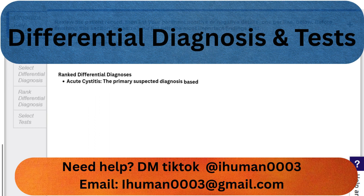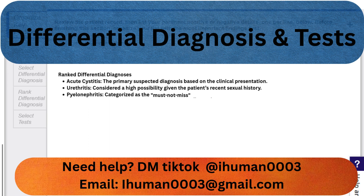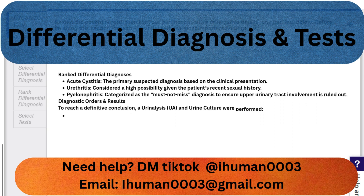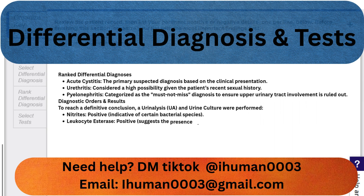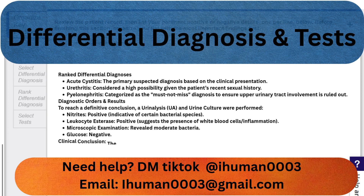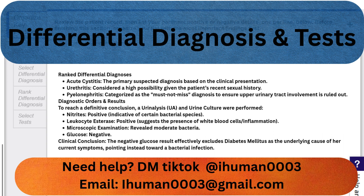Our ranked differential for this case is: acute cystitis as our leading diagnosis; urethritis due to sexual history; diabetes mellitus because of the polyuria and family history; and pyelonephritis as our must-not-miss diagnosis. To confirm, we order a urinalysis and culture. The UA is positive for nitrites and leukocyte esterase, and the microscopic shows moderate bacteria. The glucose is negative, which effectively rules out diabetes as the cause of her current pain.